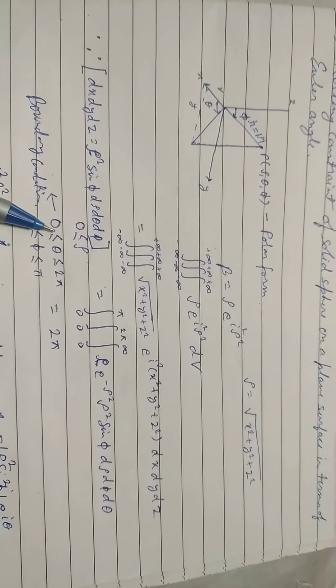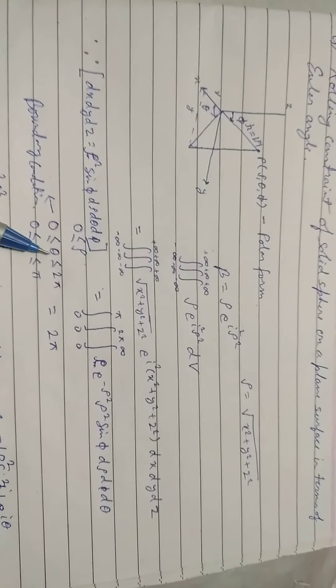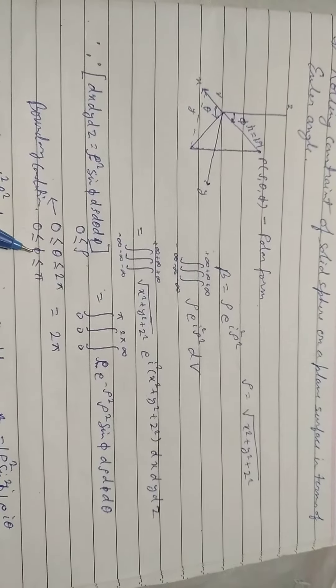Boundary conditions are rho is greater than or equal to 0, theta is between 0 and 2 pi, and phi is between 0 and pi.